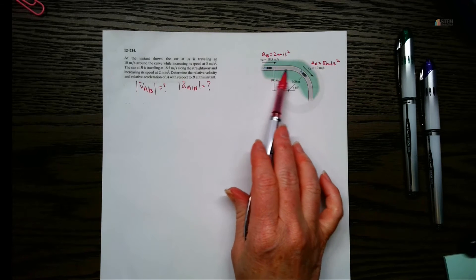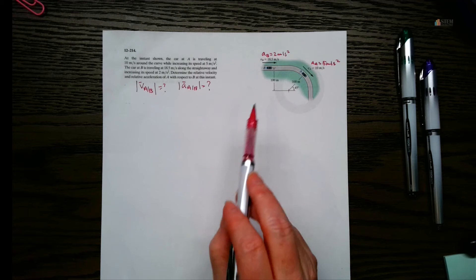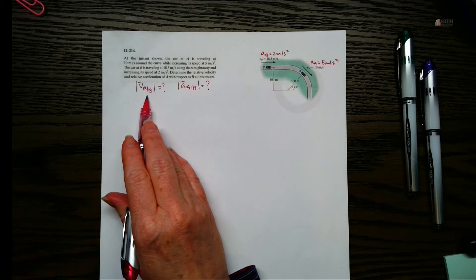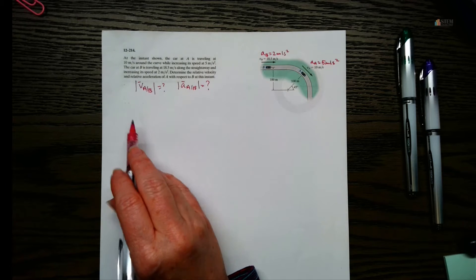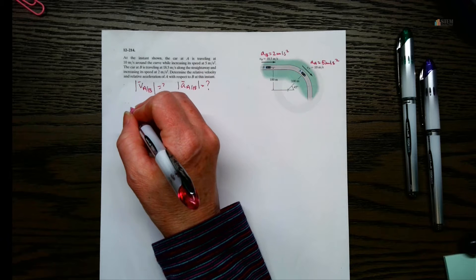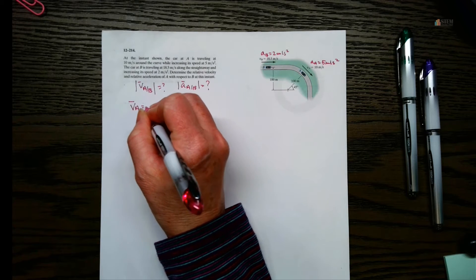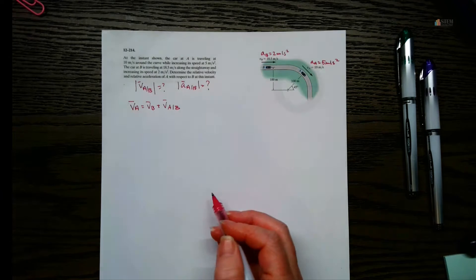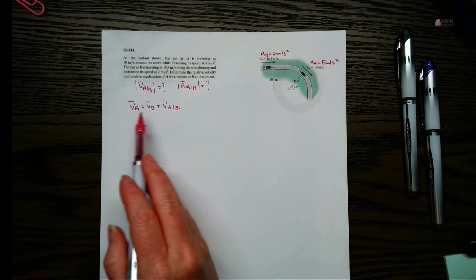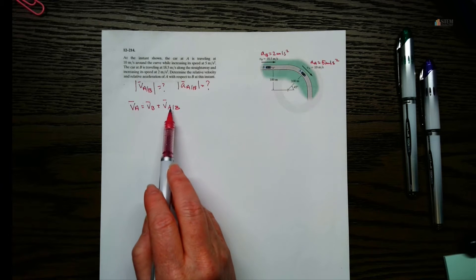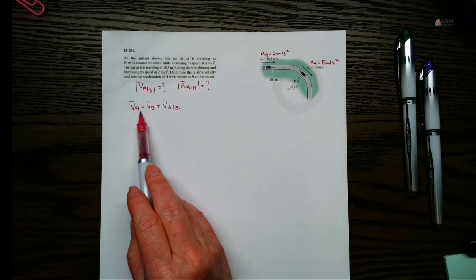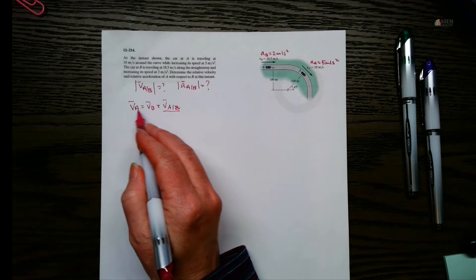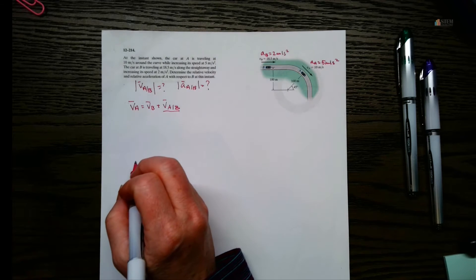Notice this is a straight path and this is a curved path — that makes a difference, so we've got to keep that in mind. Let's do velocity first. Our equation for relative velocity is: V_A equals V_B plus V_{A/B}. This comes from the vector triangle — the relative motion equation. An easy way to remember this: the variable on top is always the variable on the left. To find V_{A/B}, I need the velocity vectors V_A and V_B.